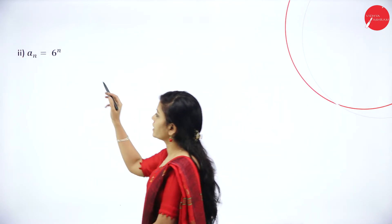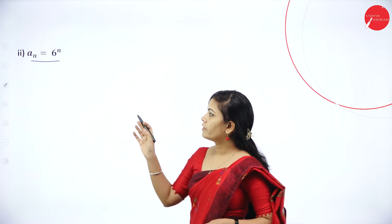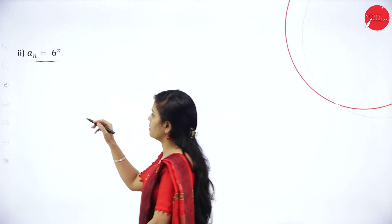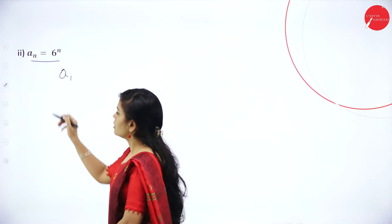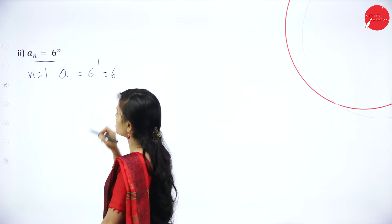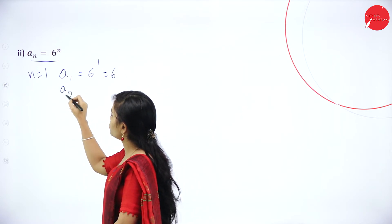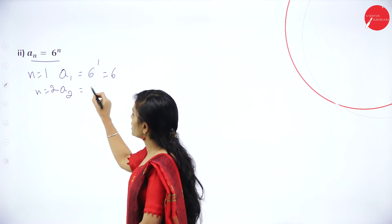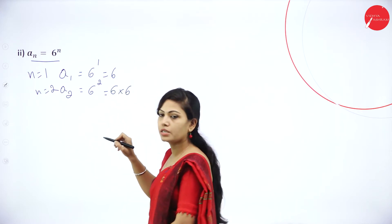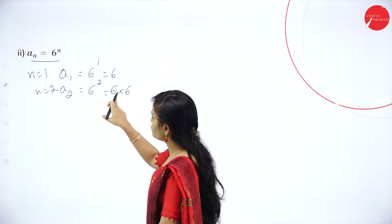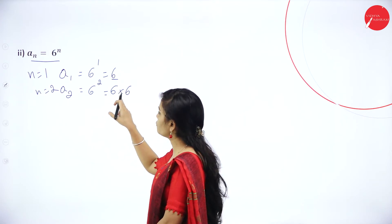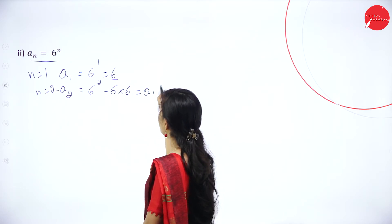The next problem: aₙ = 6ⁿ. We need to find a₁, a₂, a₃, a₄, and aₙ. For a₁, n equals 1: 6¹ = 6. For a₂, n equals 2: 6² = 6 × 6 = 36. To express a₂ using a₁: since a₁ = 6, we write a₂ = a₁ × 6.